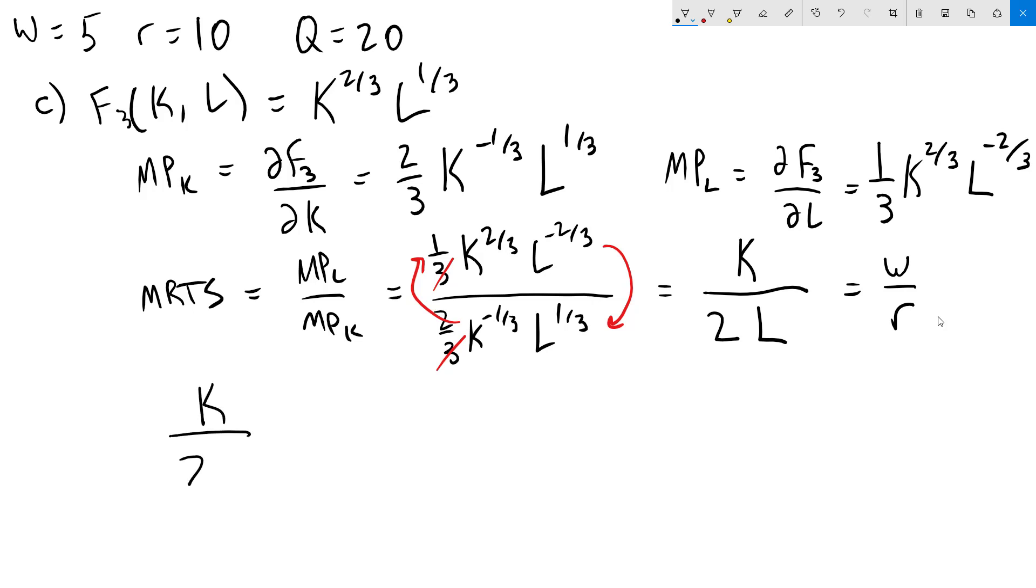Plugging in the numbers, we've got k over 2L equals 5 over 10. That gives us k over 2L equals 1 half. The 1 halves cancel. Multiply both sides by L, we've got k equals L. I'll point out here that the fact that k equals L is specific to this problem, and they are not necessarily going to be the same in other Cobb-Douglas production functions.